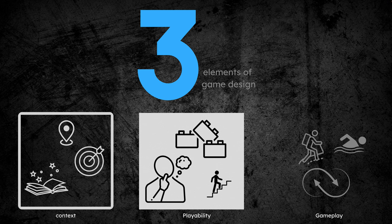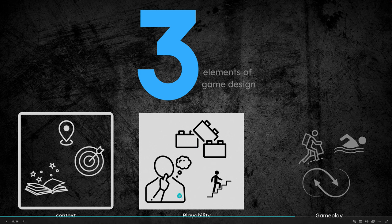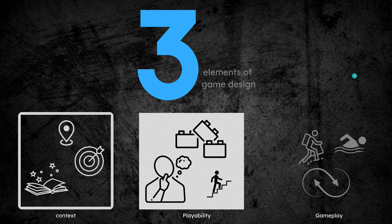Now let's talk about the three elements of game design. We have context, we have playability, and we have gameplay. You can tell these were present from the very beginning — in almost every game, you have context, playability, and gameplay. Is it in every game that you've played? Have you seen all these things? Start to find out.